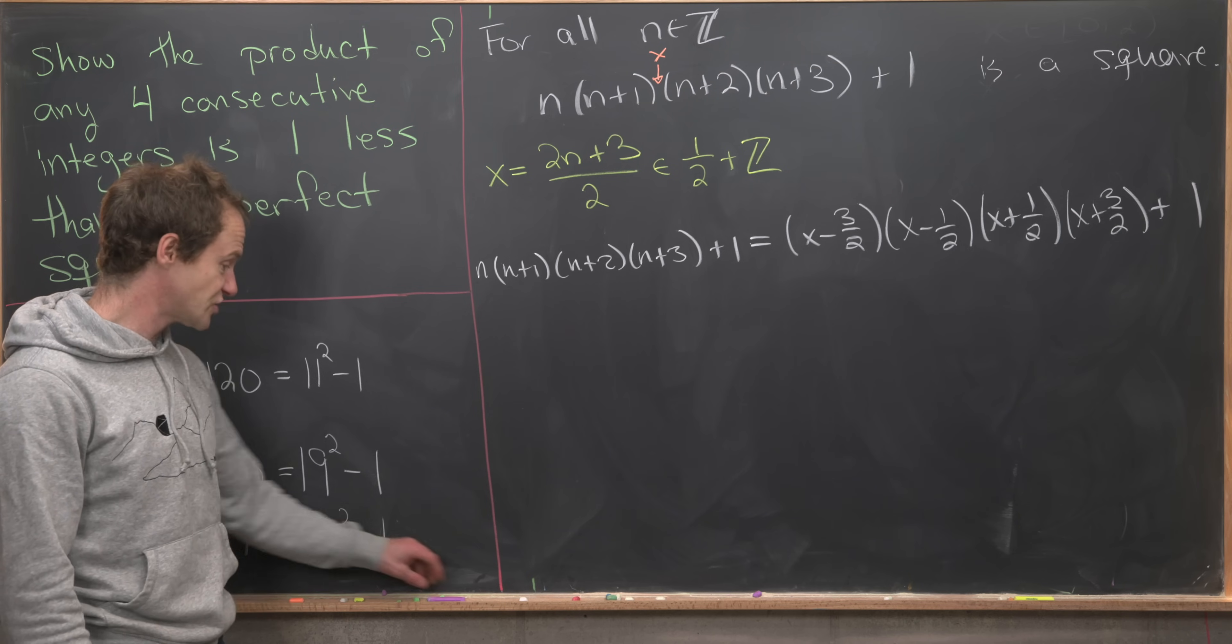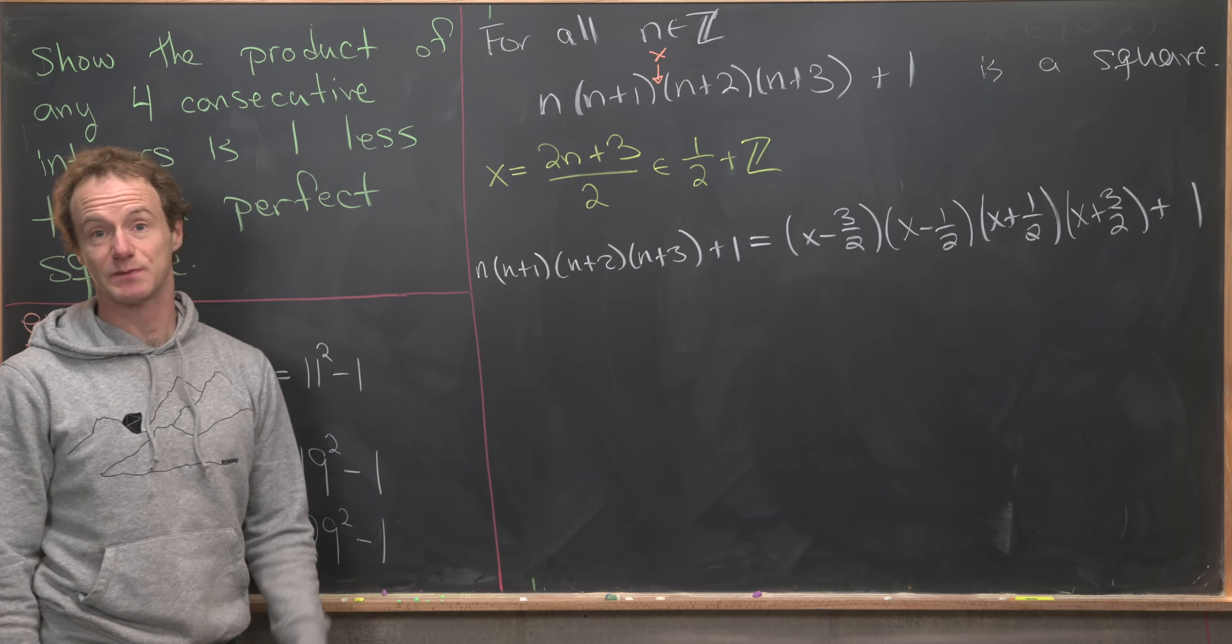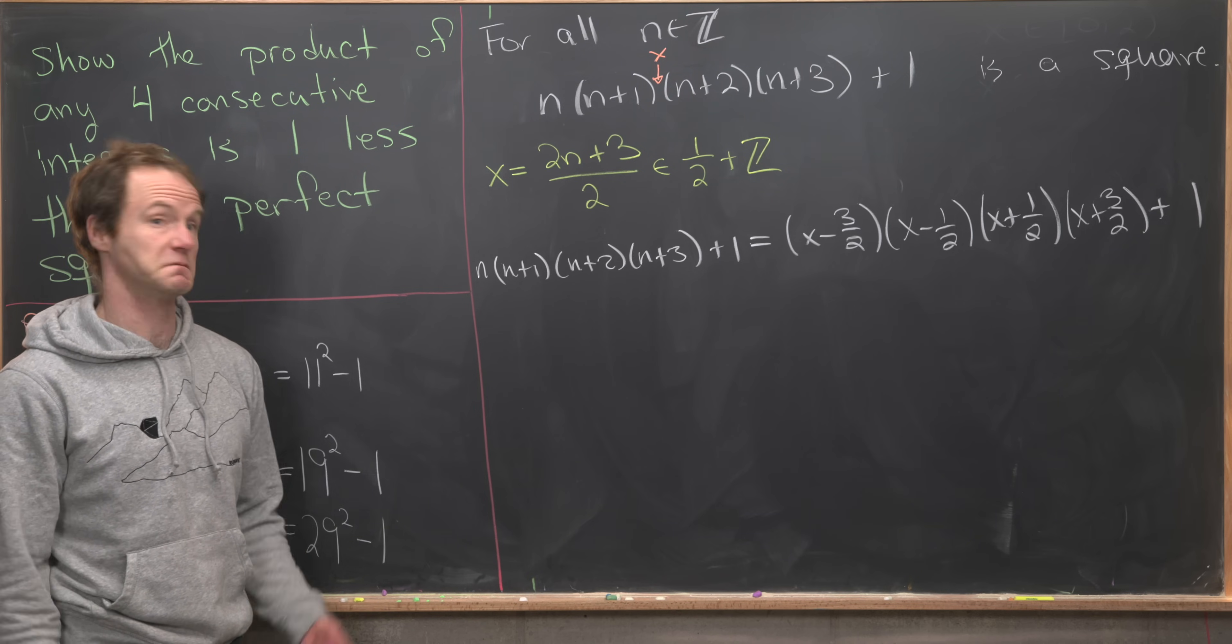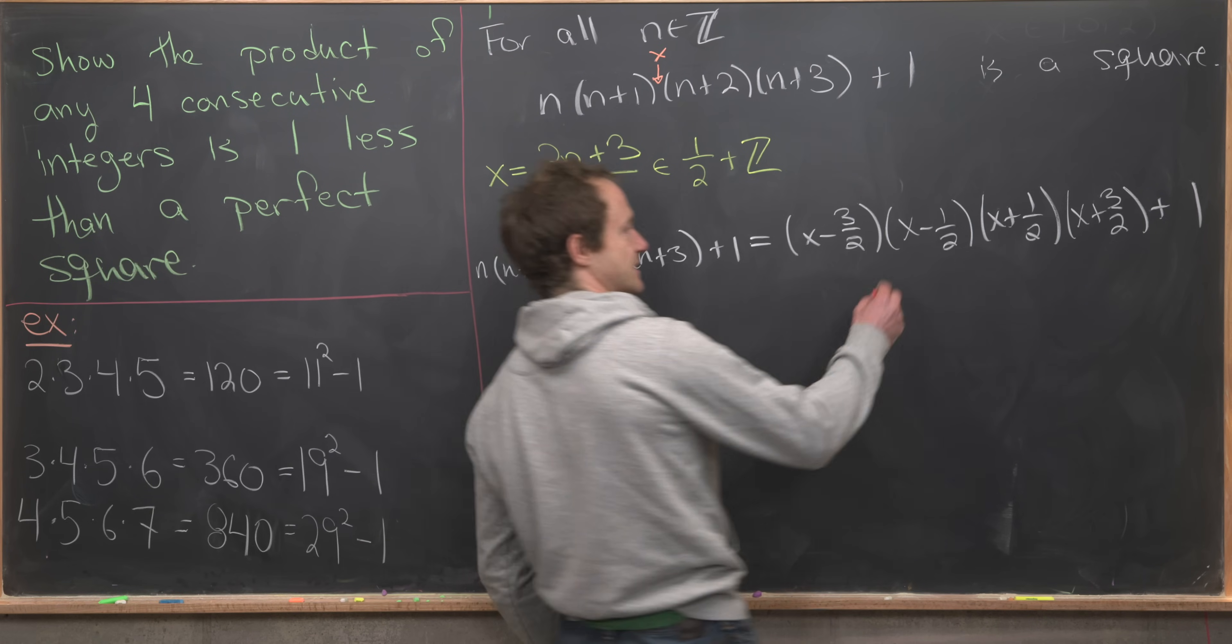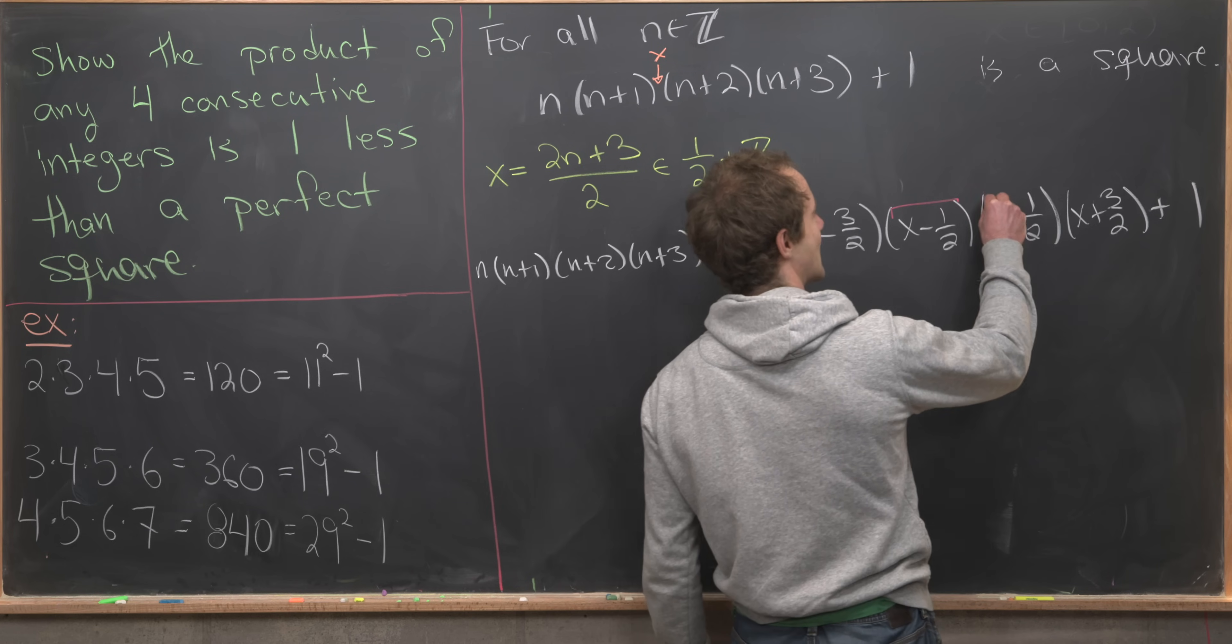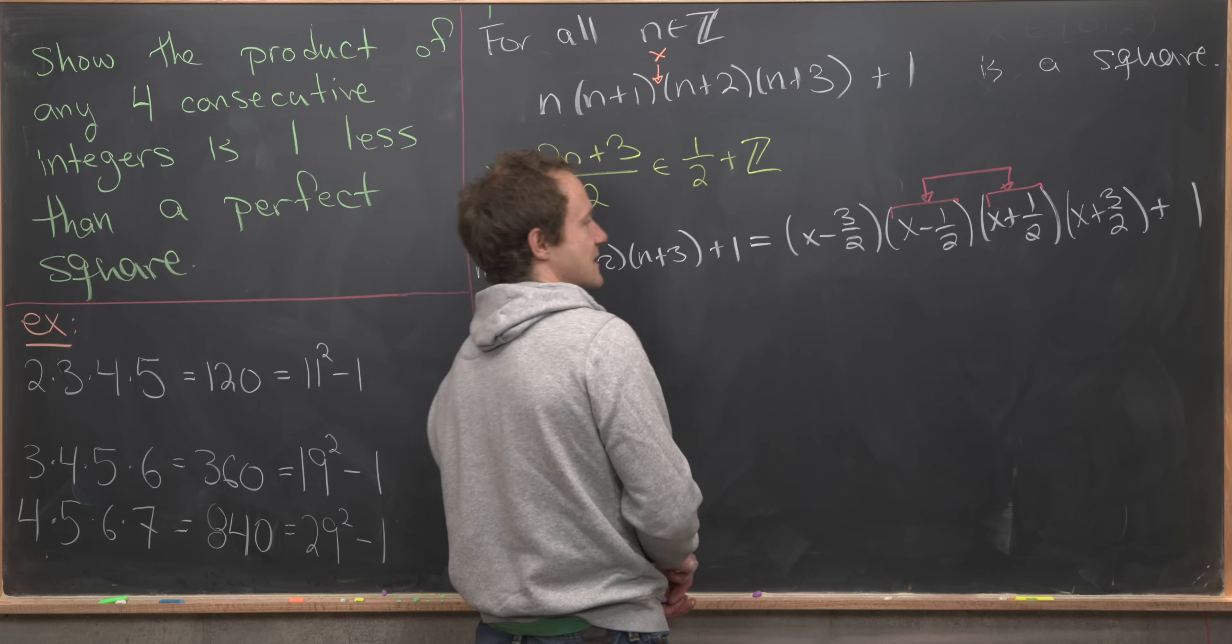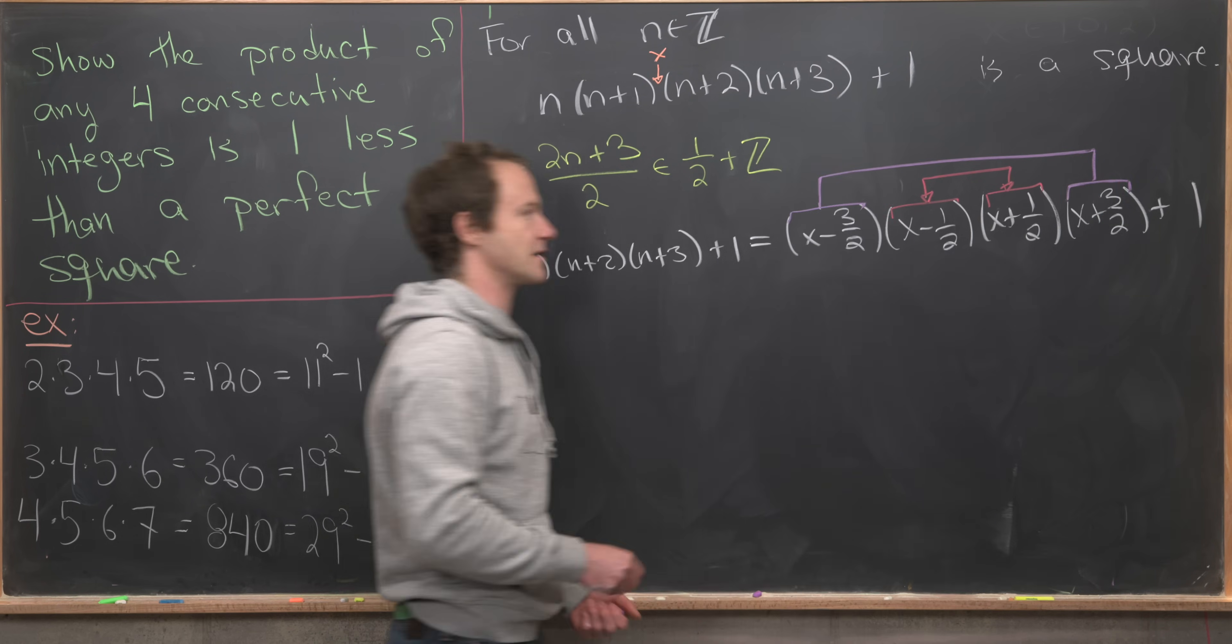But now we've got essentially the factoring of a difference of squares. This x minus 1/2 and x plus 1/2 can be pushed together to give us a nice thing. Same thing with the x minus 3/2 and the x plus 3/2. So for my next step, I'm going to take these two middle terms and multiply them together, and then these two last terms and also multiply them together.